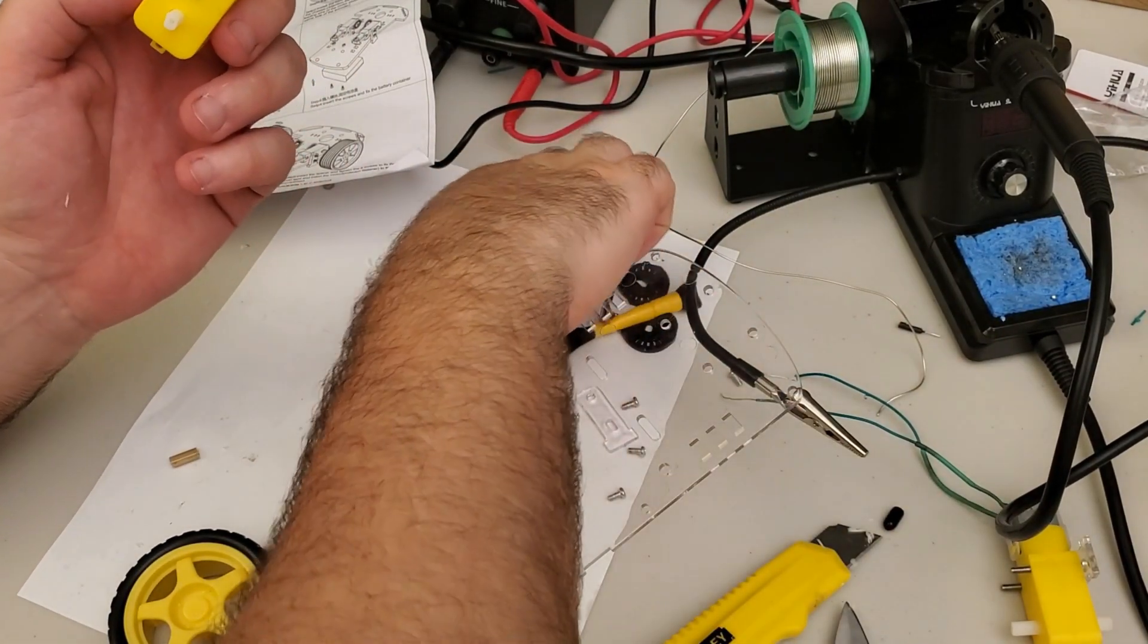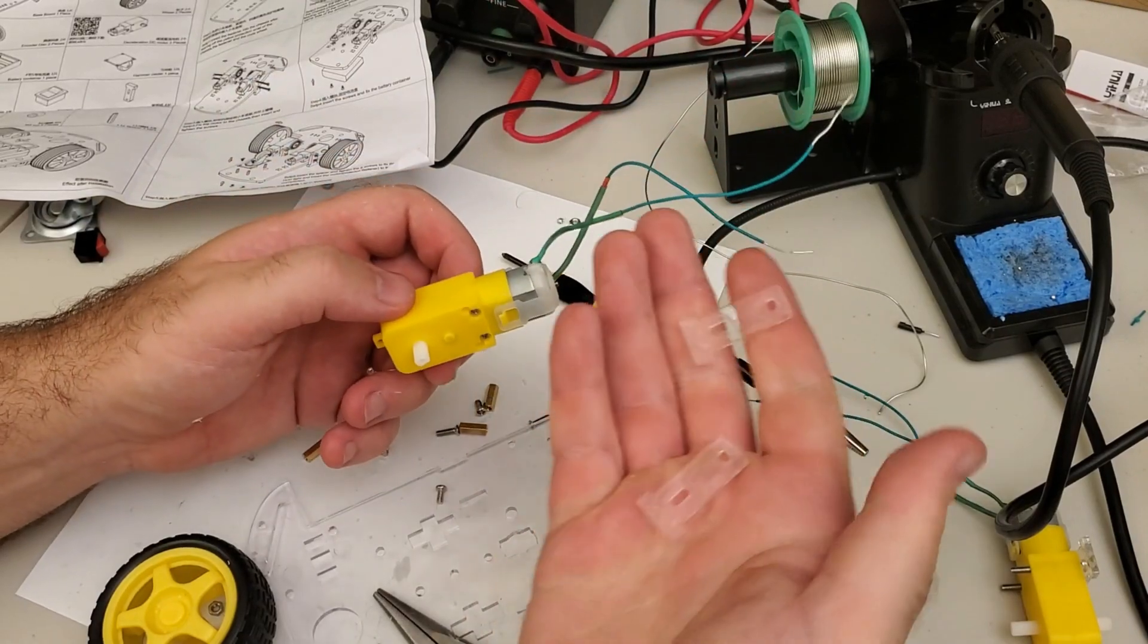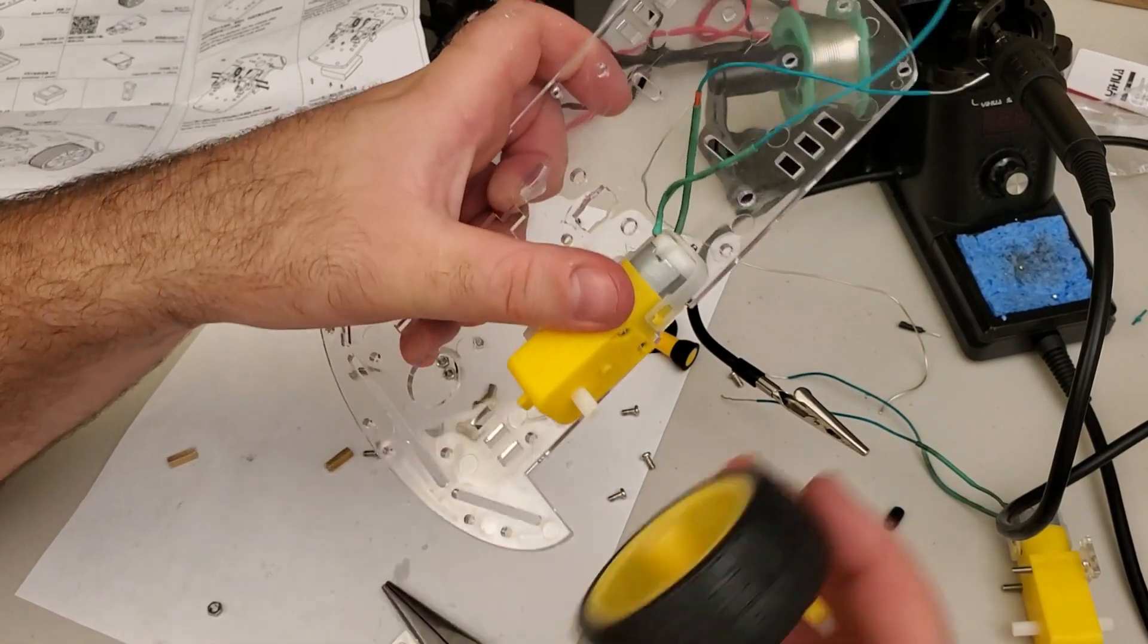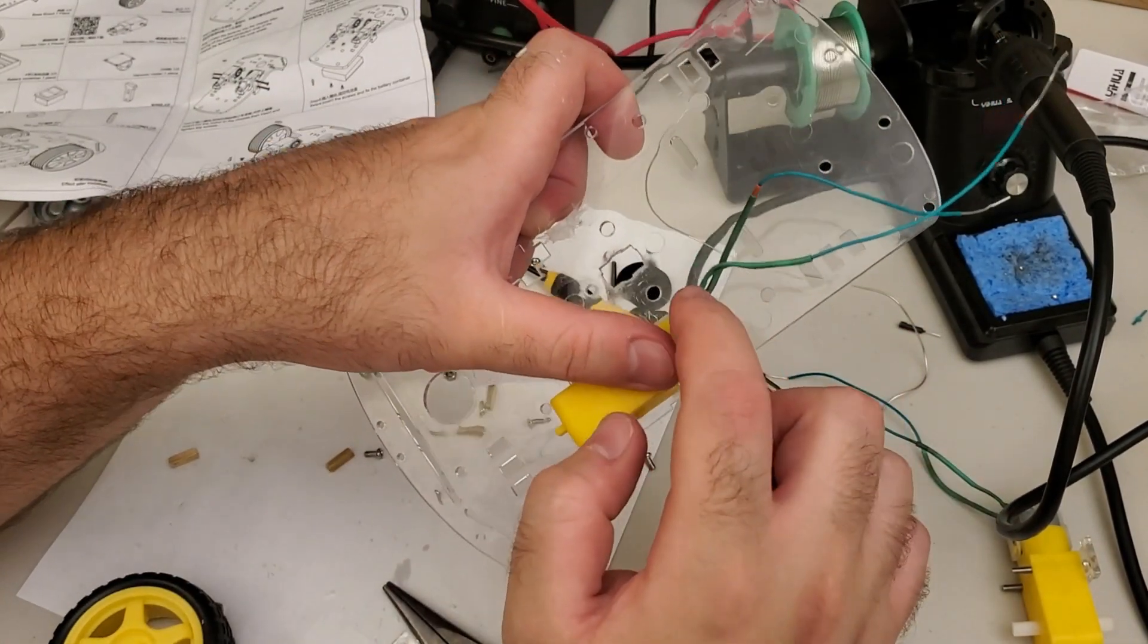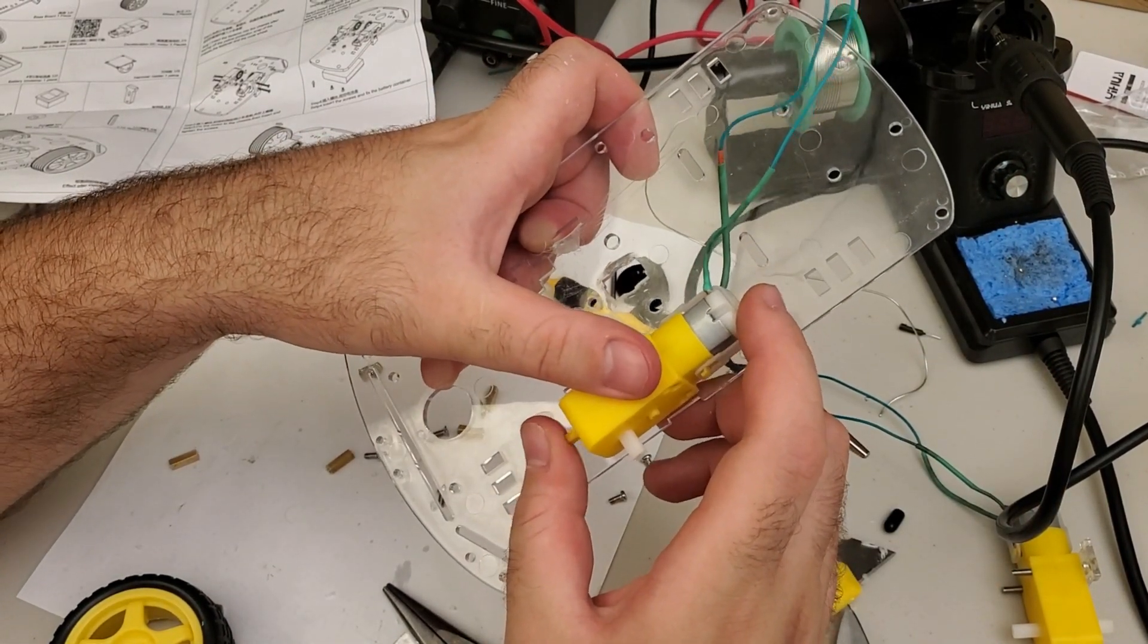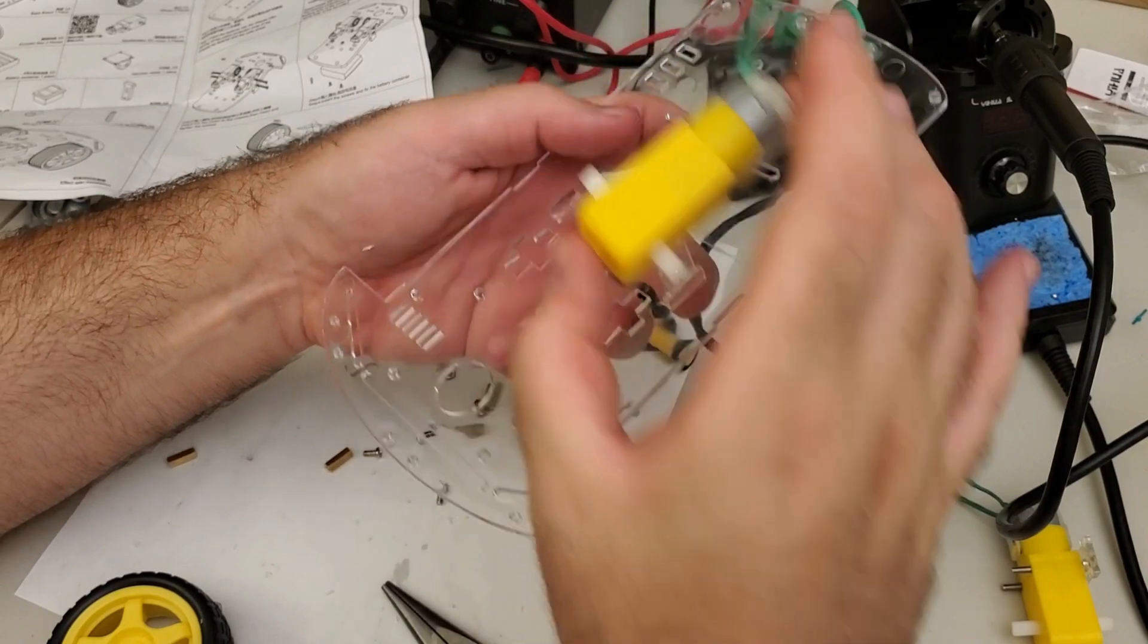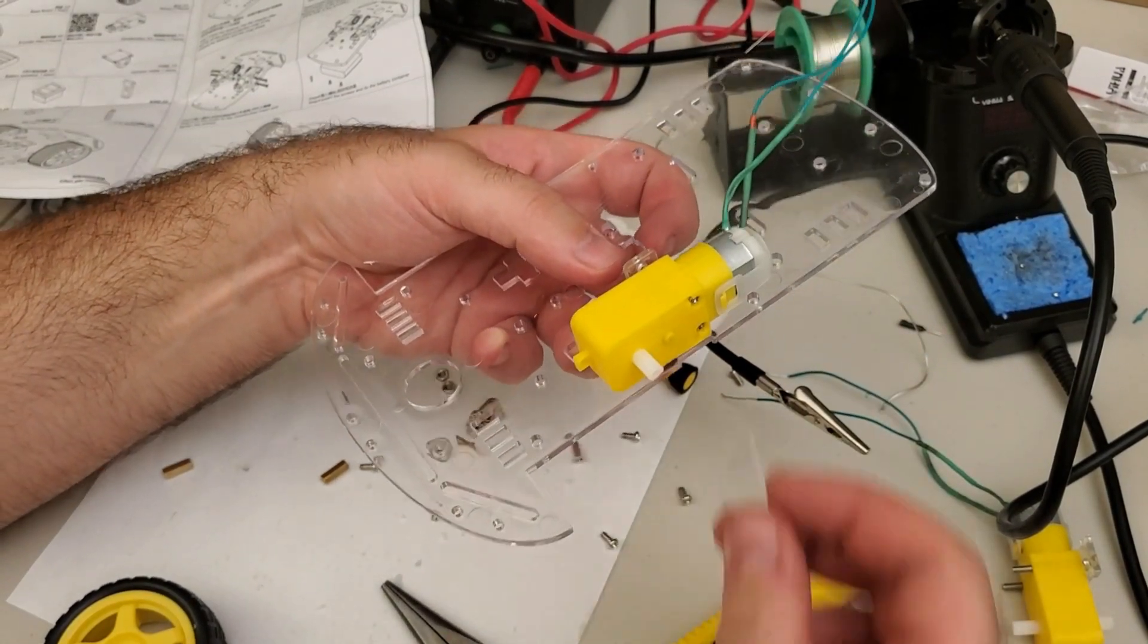To attach the motor we will need two of these brackets. Here they are. The motor will be mounted over here and later on we will mount the wheel. It's very important that these wires are on the inner side. To attach the motor we first need to put this bracket, then we need another bracket. Here it is.